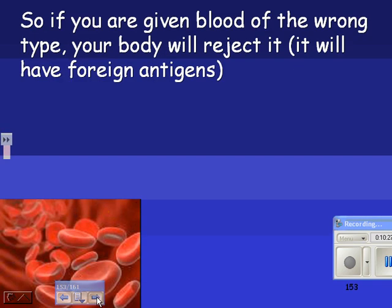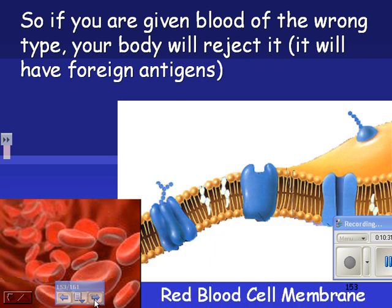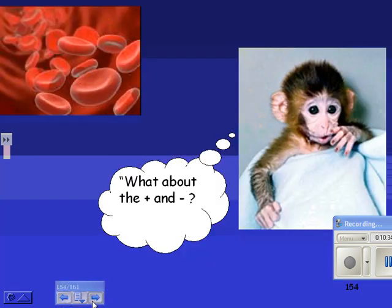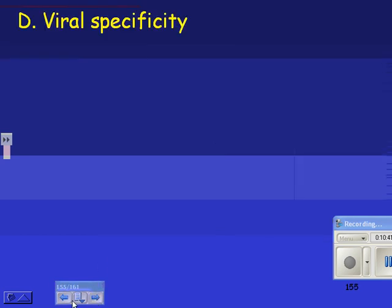If you're given blood of the wrong type, your body will reject it because it will have foreign antigens, or at least it might. The RH factor is just a whole other set — it's whether you have the RH factor or not. For now I just want you to know what these look like.